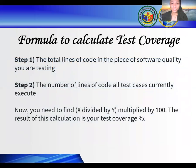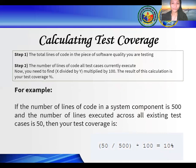To calculate test coverage, you need to follow the steps below. Number one: find the total lines of code in the piece of software you are testing. Number two: find the number of lines of code executed across all test cases currently. Now you need to divide the number of lines executed by the total lines and multiply by 100. The result is your test coverage percentage. For example, if the number of lines of code in a system component is 500 and the number of lines executed across all existing test cases is 50, then your test coverage is 50 divided by 500 times 100, which equals 10%.